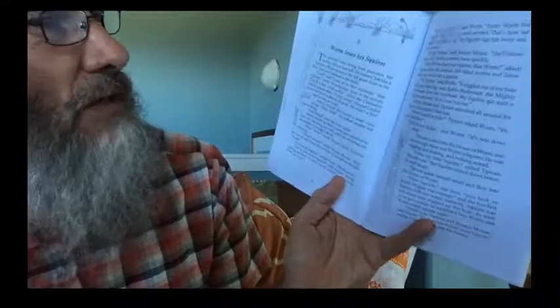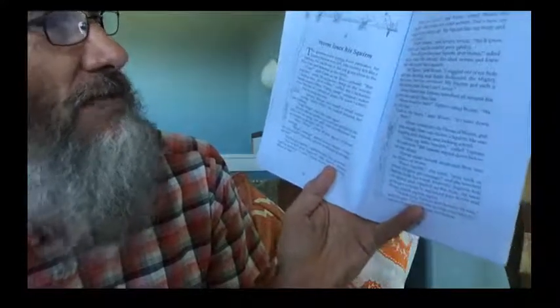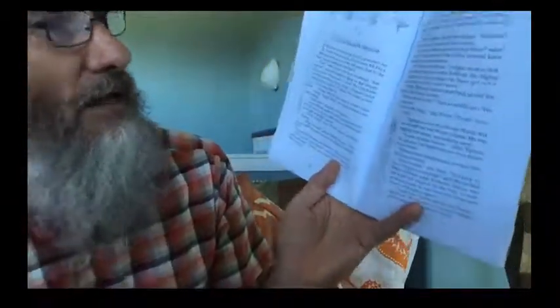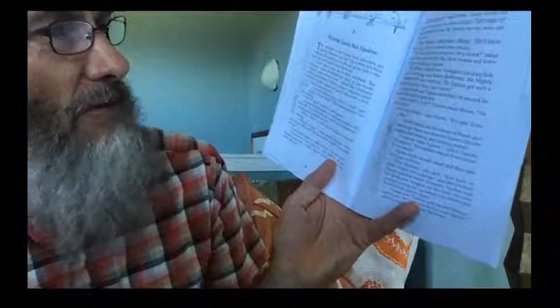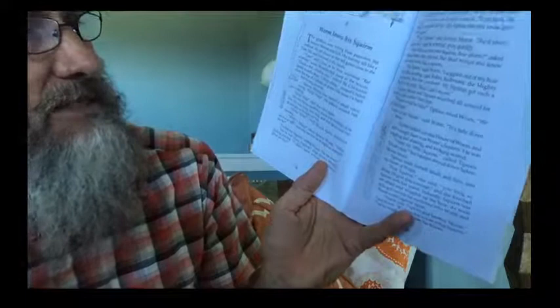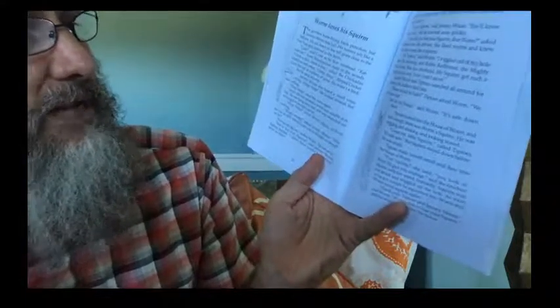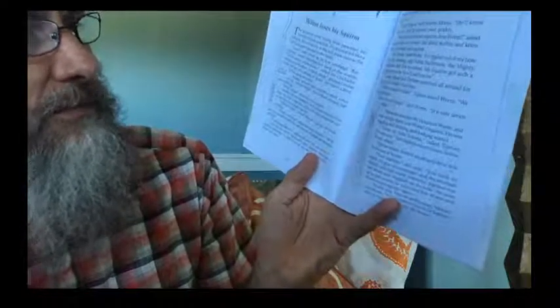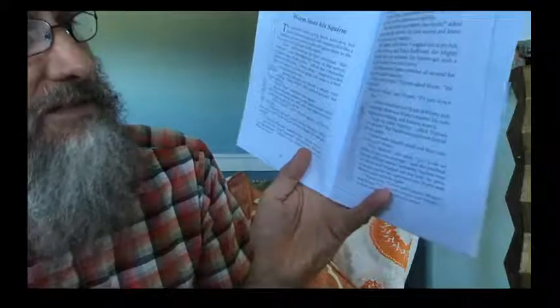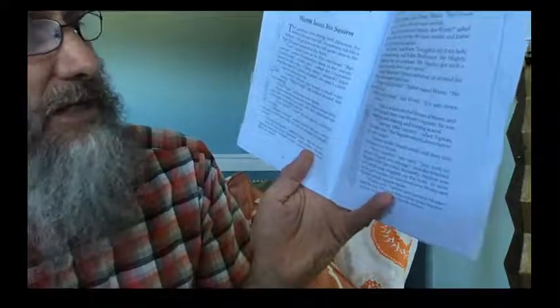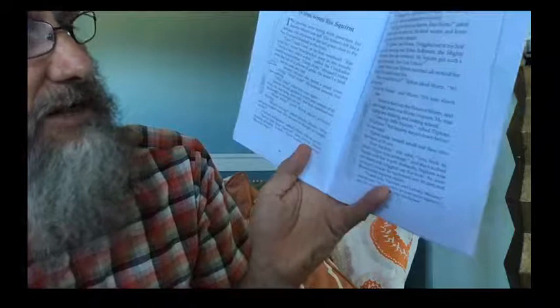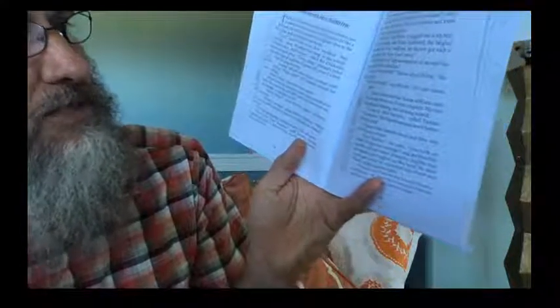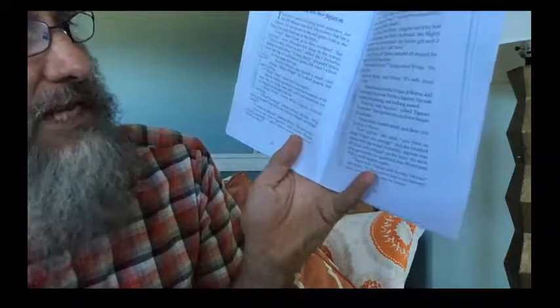Oh, how did you lose your squirm, dear worm? asked Tiptoes when she arrived. She liked worms and knew that every worm has a squirm. Oh, Tiptoes, said the worm. I wiggled out of my hole early this morning, and Robin Redbreast, the mighty worm-eater, flew low overhead. My squirm got such a fright, he ran away. And now I can't move. Jeremy Mouse and Tiptoes searched all around for squirm, but couldn't find him. Where would he hide? asked Tiptoes. We can't find him. Look in my house, said worm. It's safe down there.